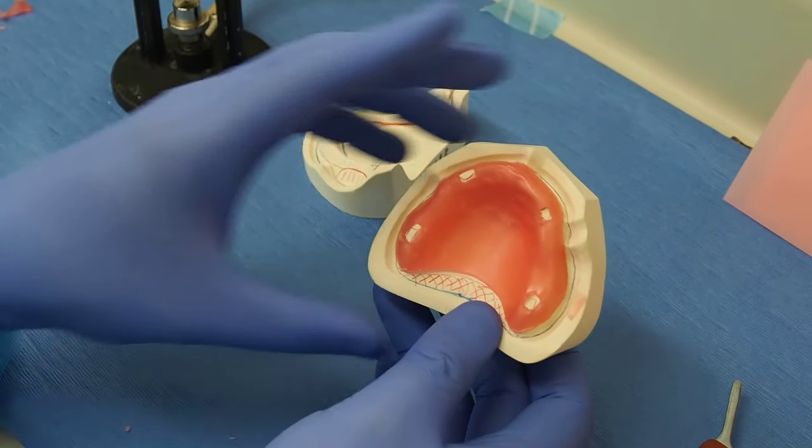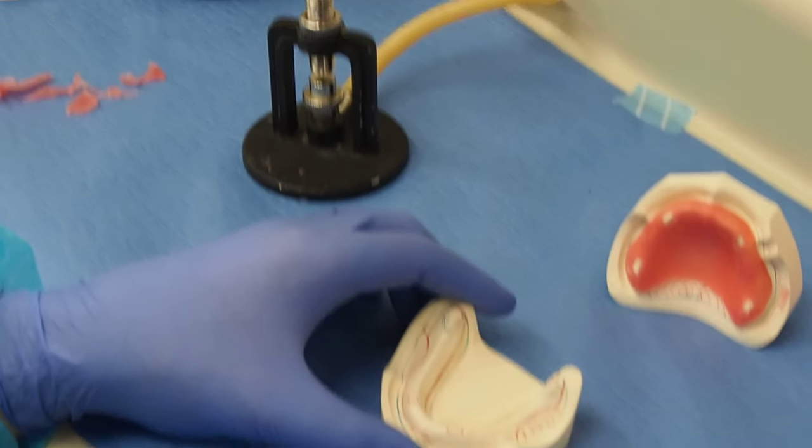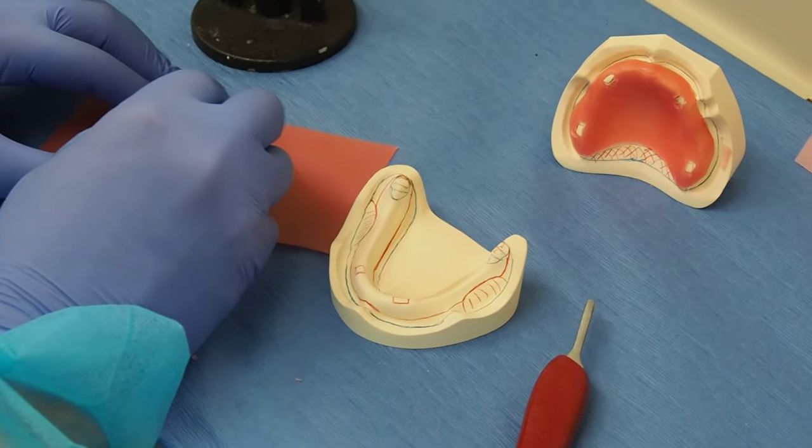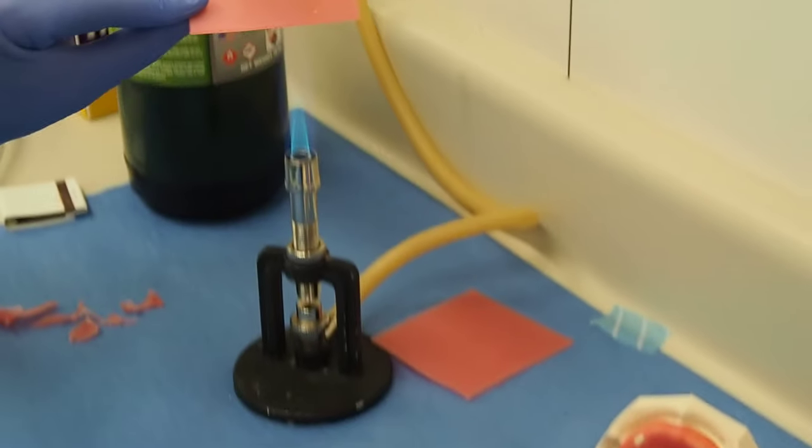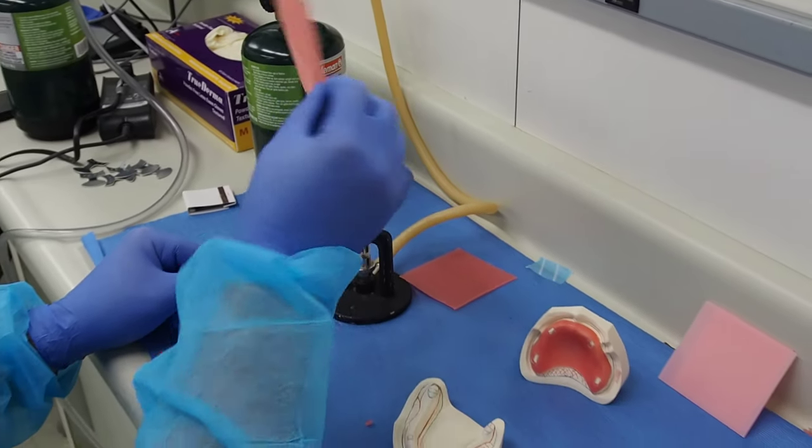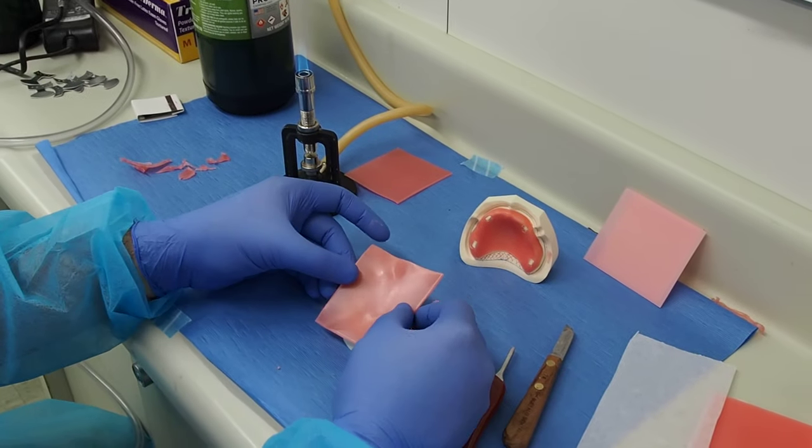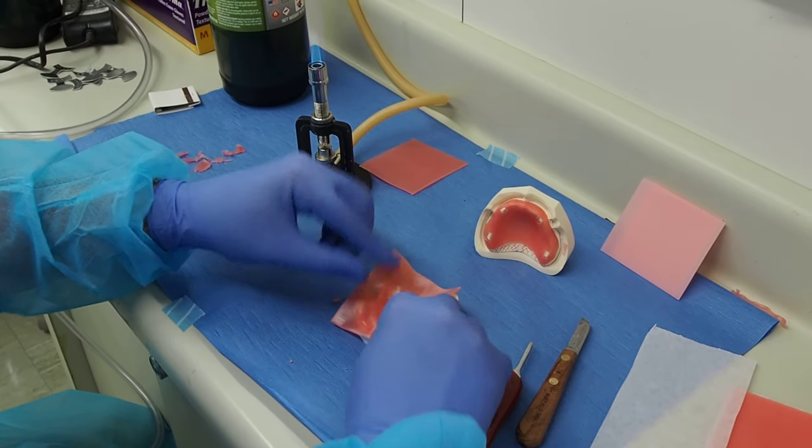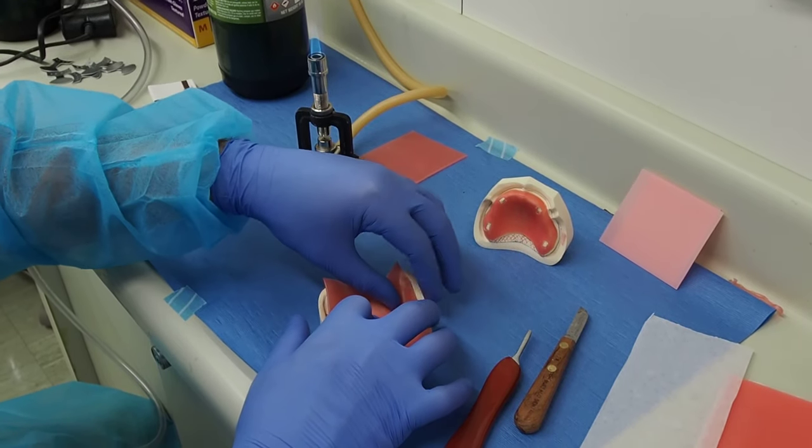Let's go now with the lower. Again, we'll take the other half. You can even, instead of getting the whole plate, get just half of the plate and warm it up. Once you warm it up, I start putting it or adapting it on the ridge.